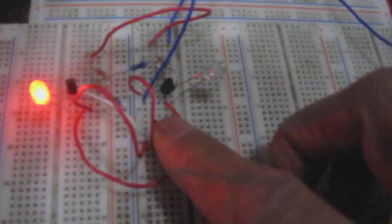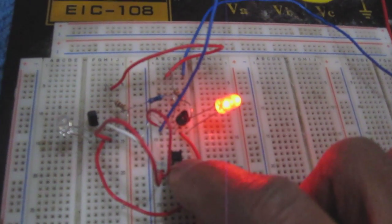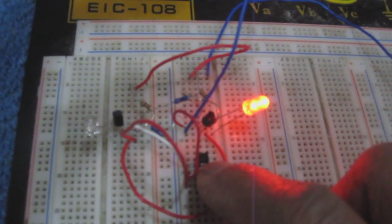And by moving the toggle switch to the other side, the other LED turns on and the first one turns off.